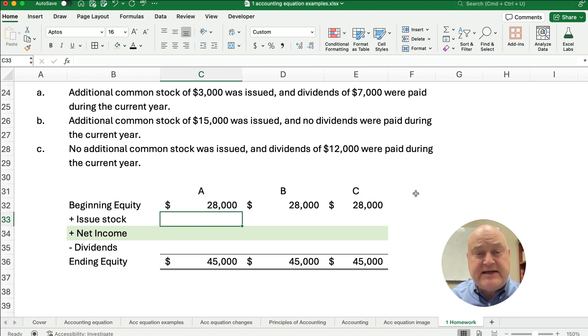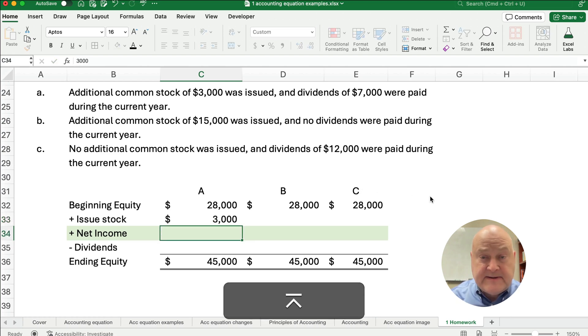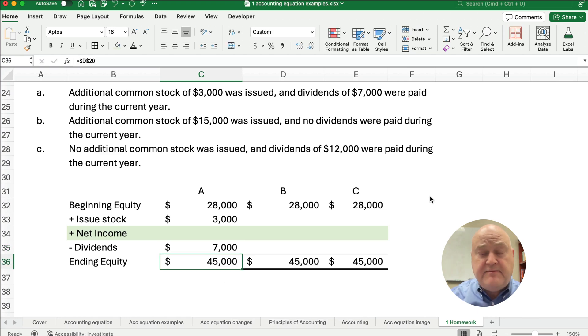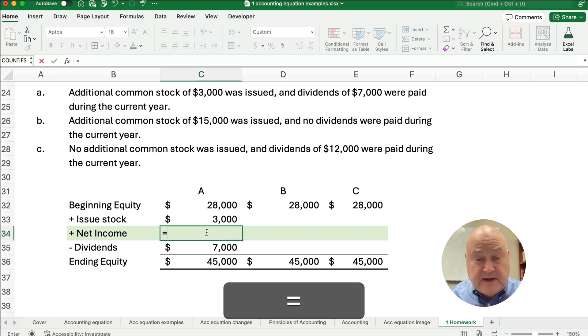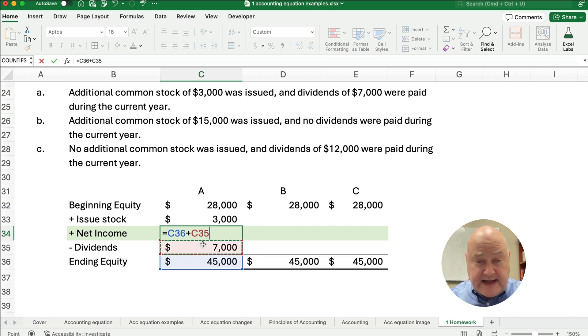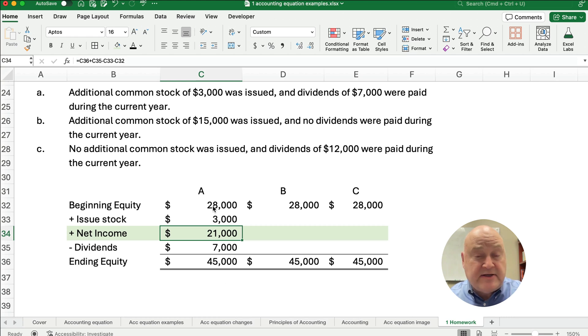So item A, we issue additional common stock of $3,000 and we have dividends of 7,000. How do we back in and find what happens? Well, if we go down, we go 28 plus 3 plus net income minus 7 gives us 45. So we're going to have to work our way backwards to figure out what net income is. So here's what we do. We're going to take the 45, start with the bottom, and we're going to add the dividends because we subtracted going down, but we're going to subtract out the two pluses here minus the 3,000 issuing stock minus the 28,000. So what we have is our net income is 21,000.